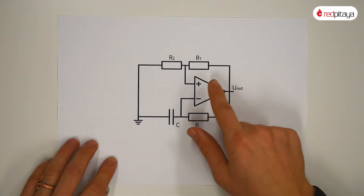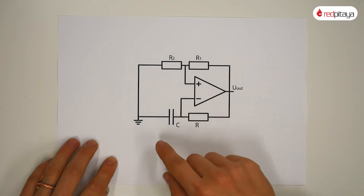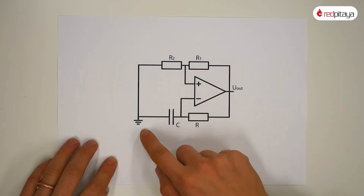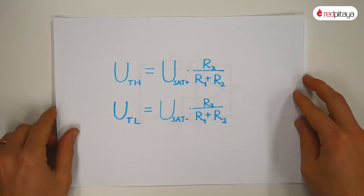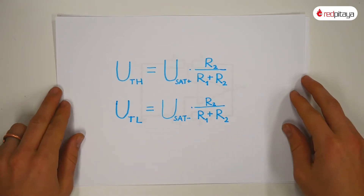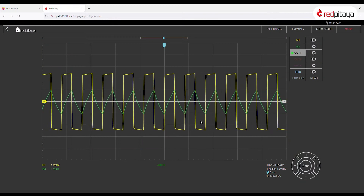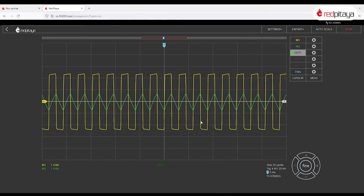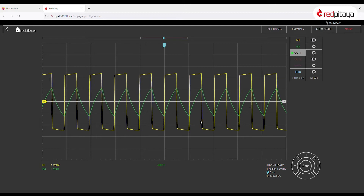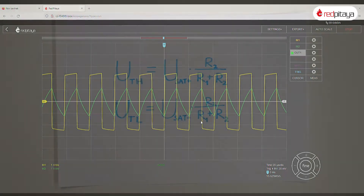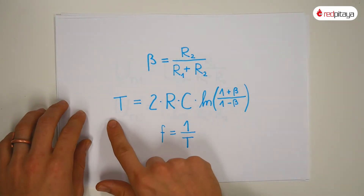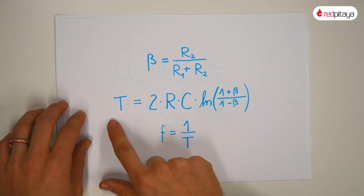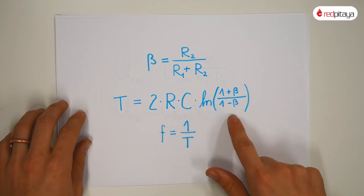I'd like to spend a minute to talk about the equations. Since reference voltage in our circuit is zero, high threshold voltage and low threshold voltage are symmetrical around ground. Turning the potentiometer impacts the signal's frequency. This is due to the changing threshold voltage and thus varying time between the output's transition and RC-filtered voltage exceeding the threshold. Here are the equations: beta equals R2 over (R1 plus R2) — that's from the potentiometer. The second equation is used for period calculation, and naturally frequency is 1 over period.